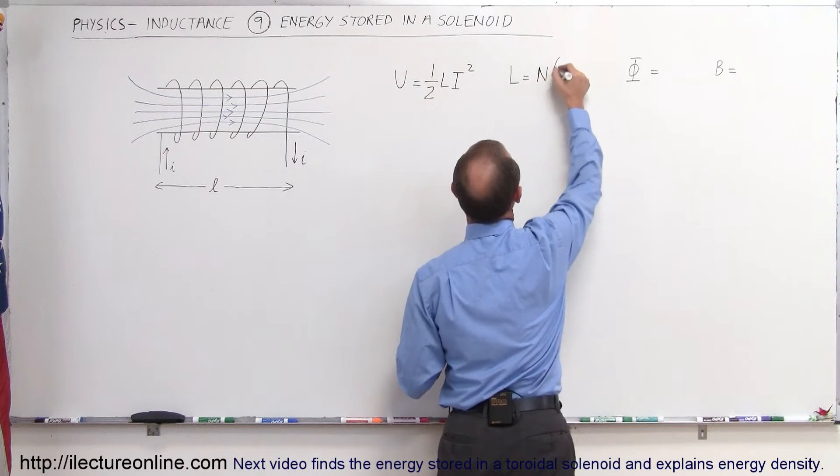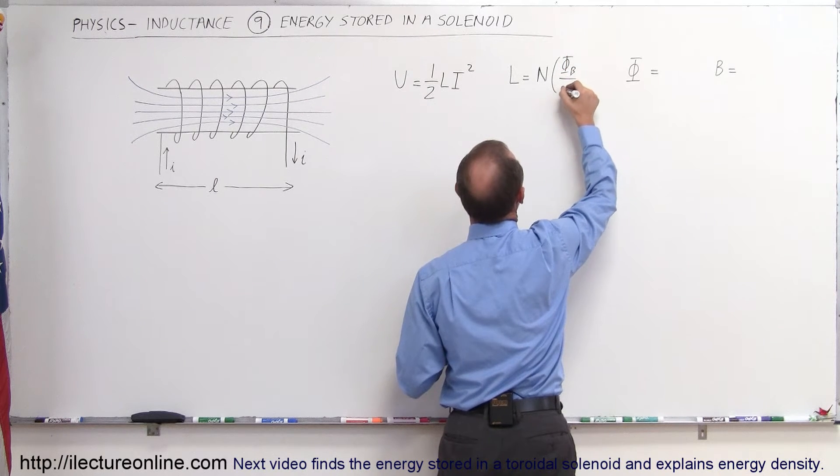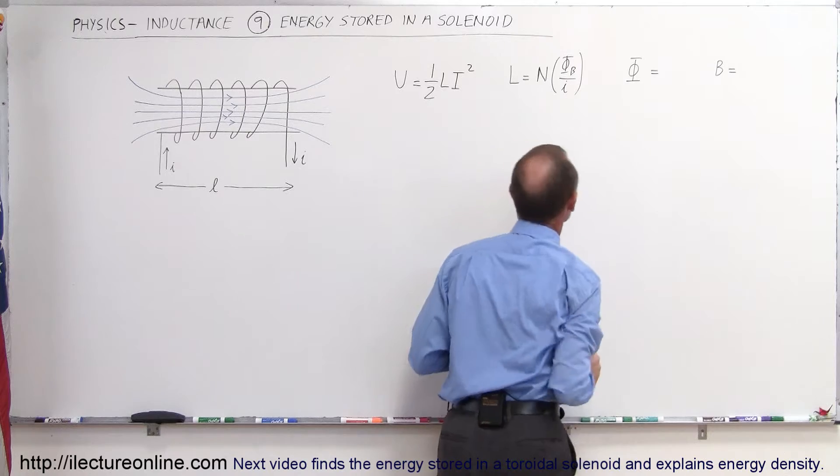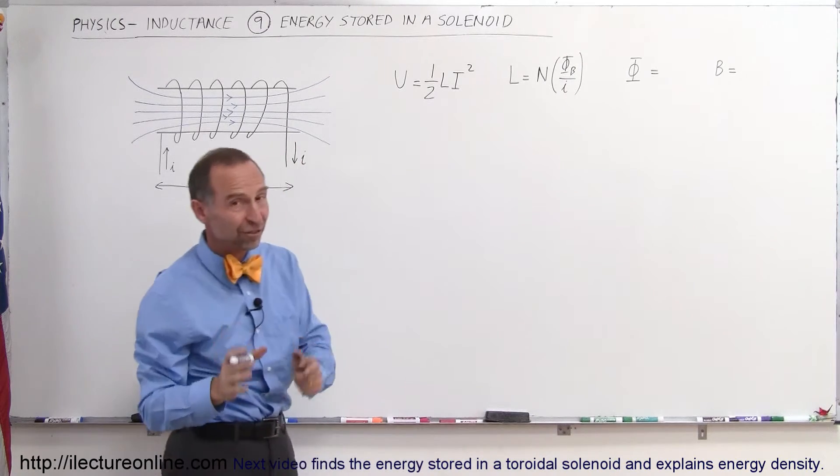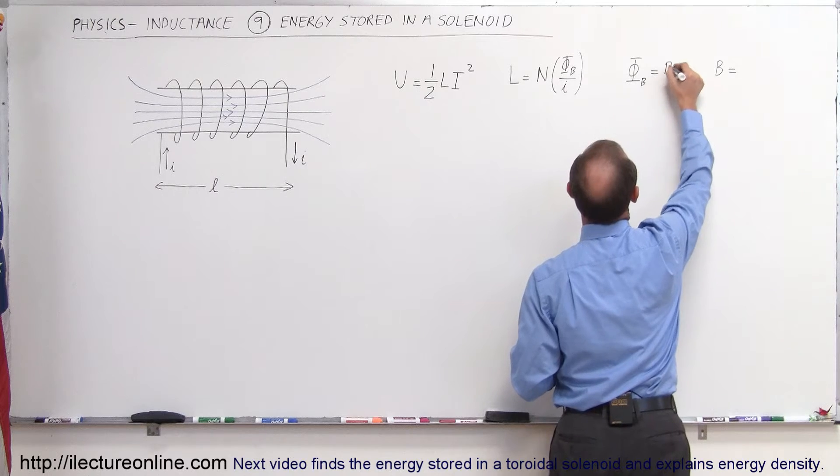By definition, the magnetic flux is equal to the magnetic field times the cross-sectional area. Here with a solenoid, if the solenoid is long enough and skinny enough so that the length is much larger than the diameter, we can assume pretty well a constant magnetic field throughout the coil or throughout the solenoid.